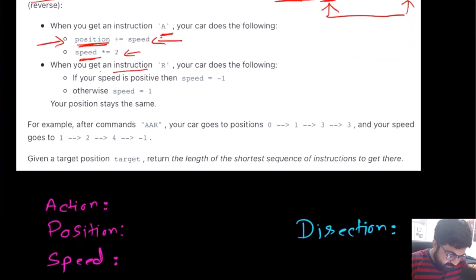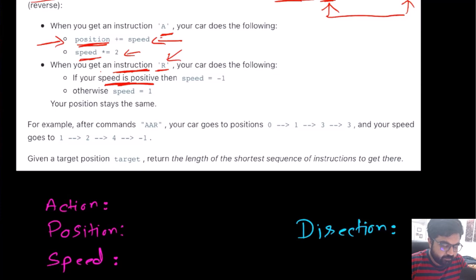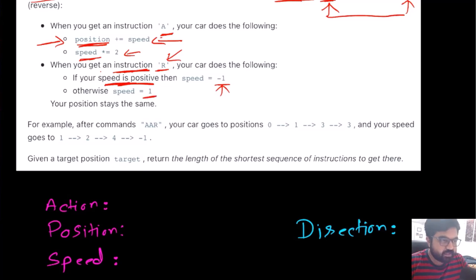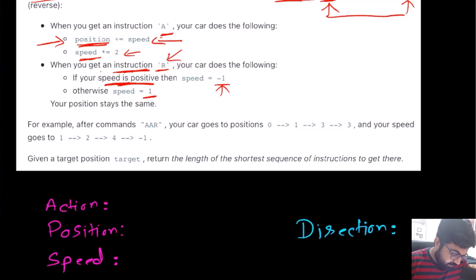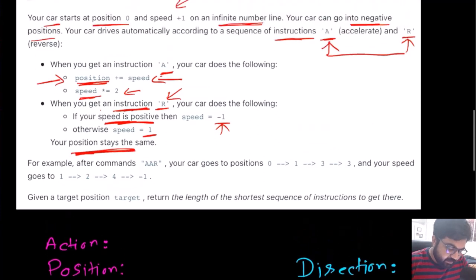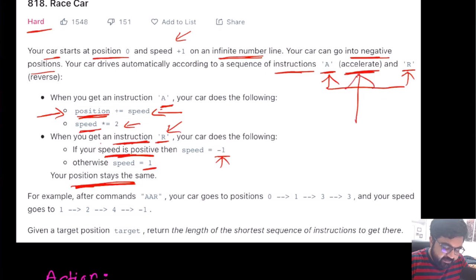For the reverse instruction, whenever we hit the reverse button, if the car was going in the positive direction the speed turns to negative one, and if it was going negative the speed turns to positive one. The car changes direction and speed resets to one, but the car's position remains the same — the car only moves when we hit the accelerate button.